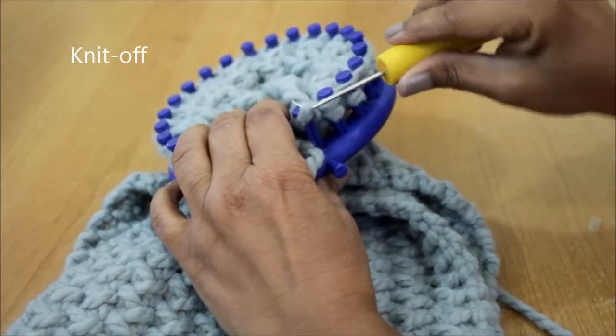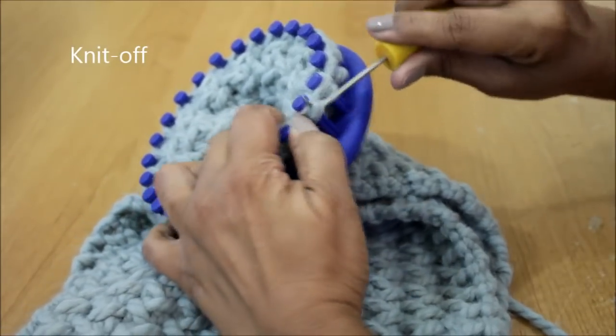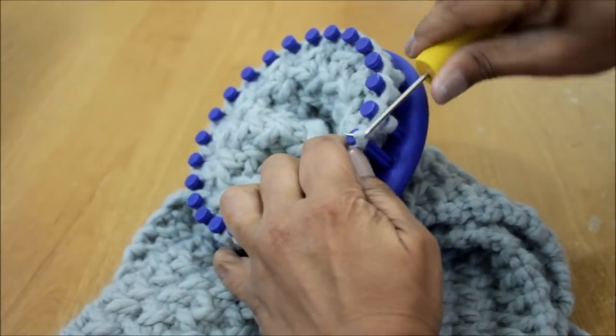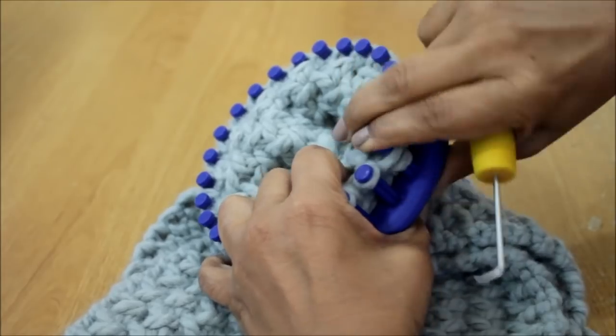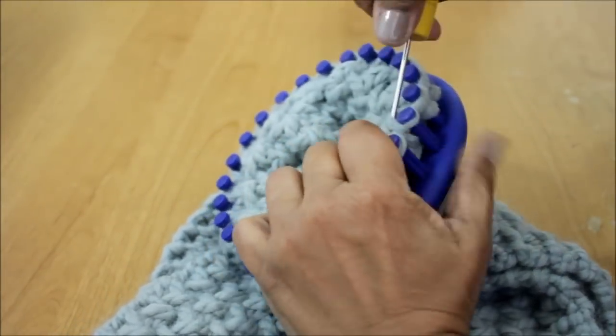And once they're on, you're just going to knit off. You may find that you have to hold on to some of the loops because the top ones are looser than the bottom. And my loom keeps losing my pegs.